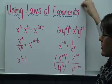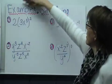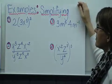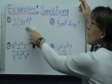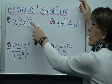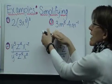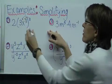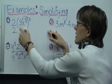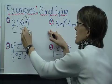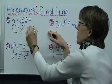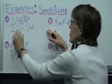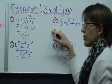So those are the laws of exponents we're going to be using. In our first example, we're simplifying the expression 2 times 3x to the third, raised to the second power. That second power applies only to 3 and to x to the third. So I have 2 times 3 squared times x to the 3 times 2 power. 3 squared is 9, so my final answer is 18x to the sixth.